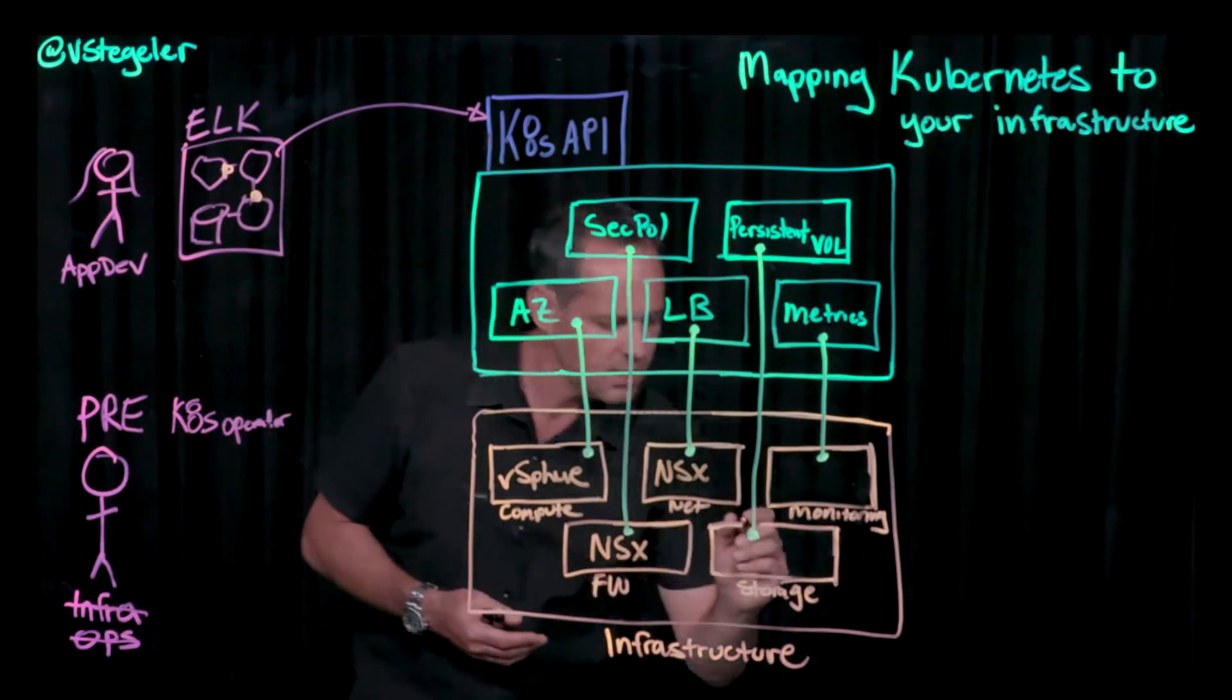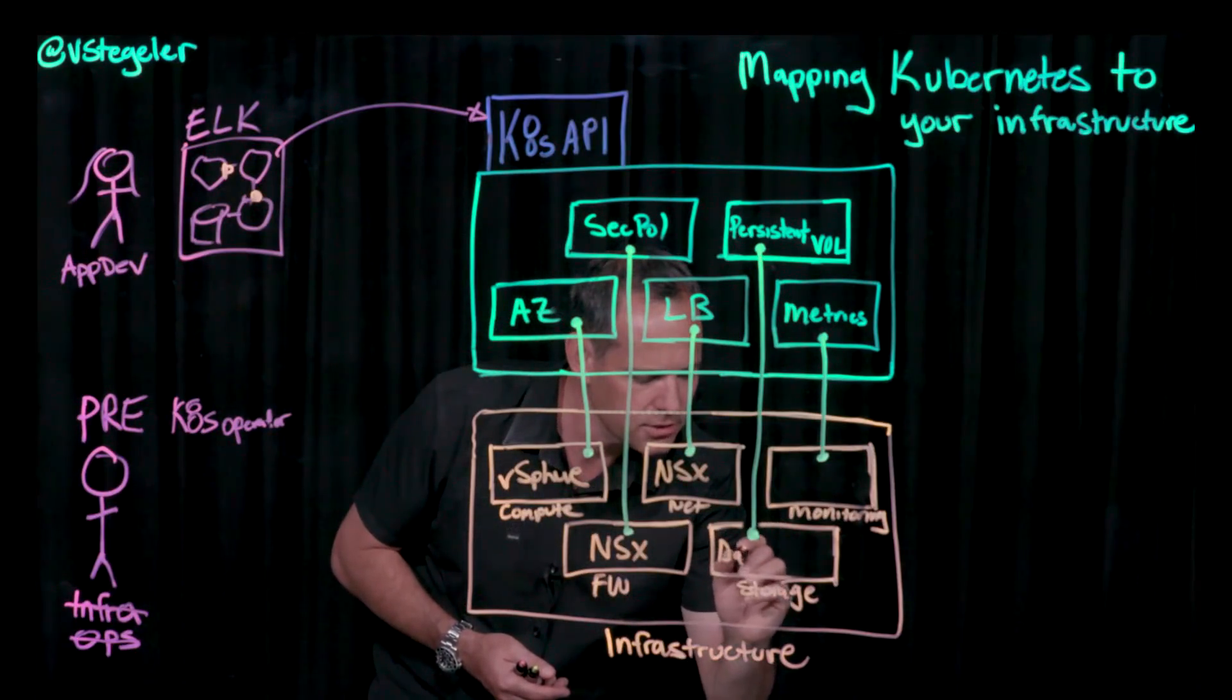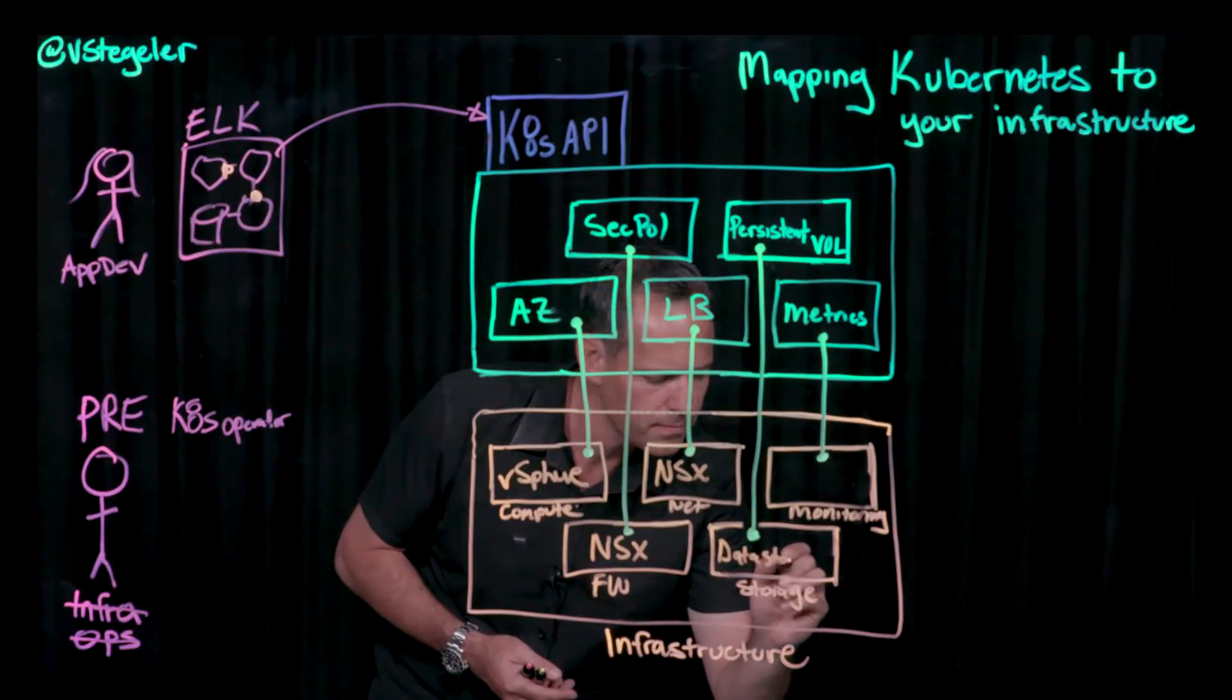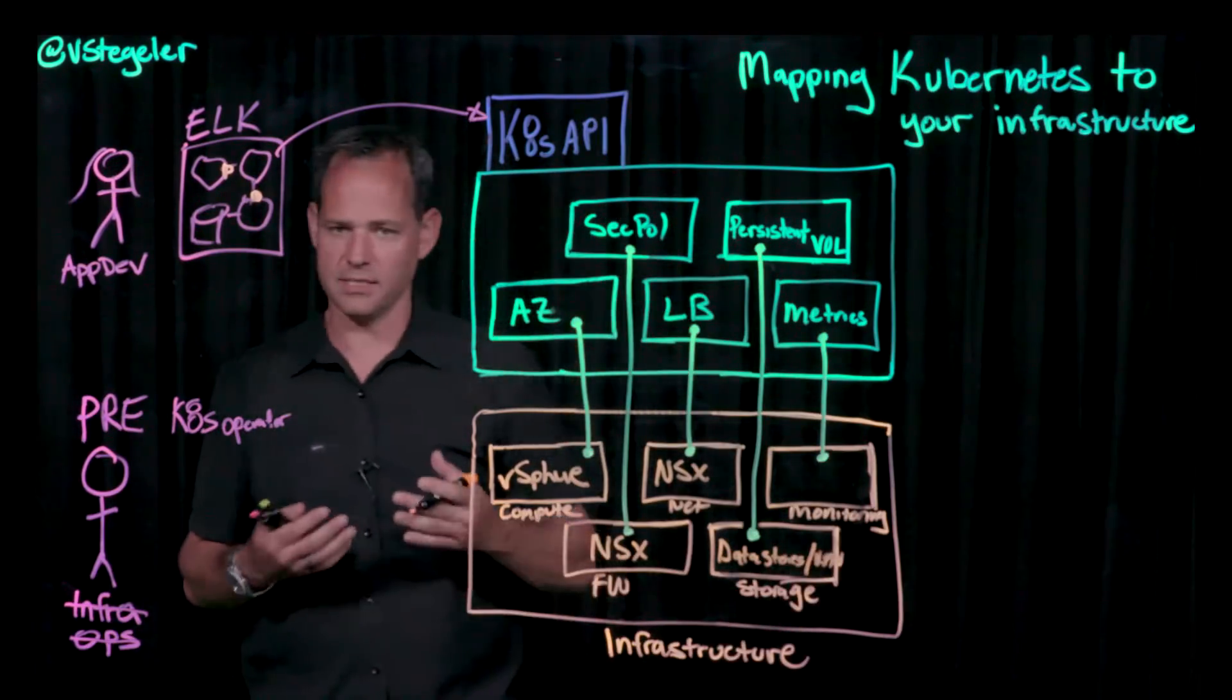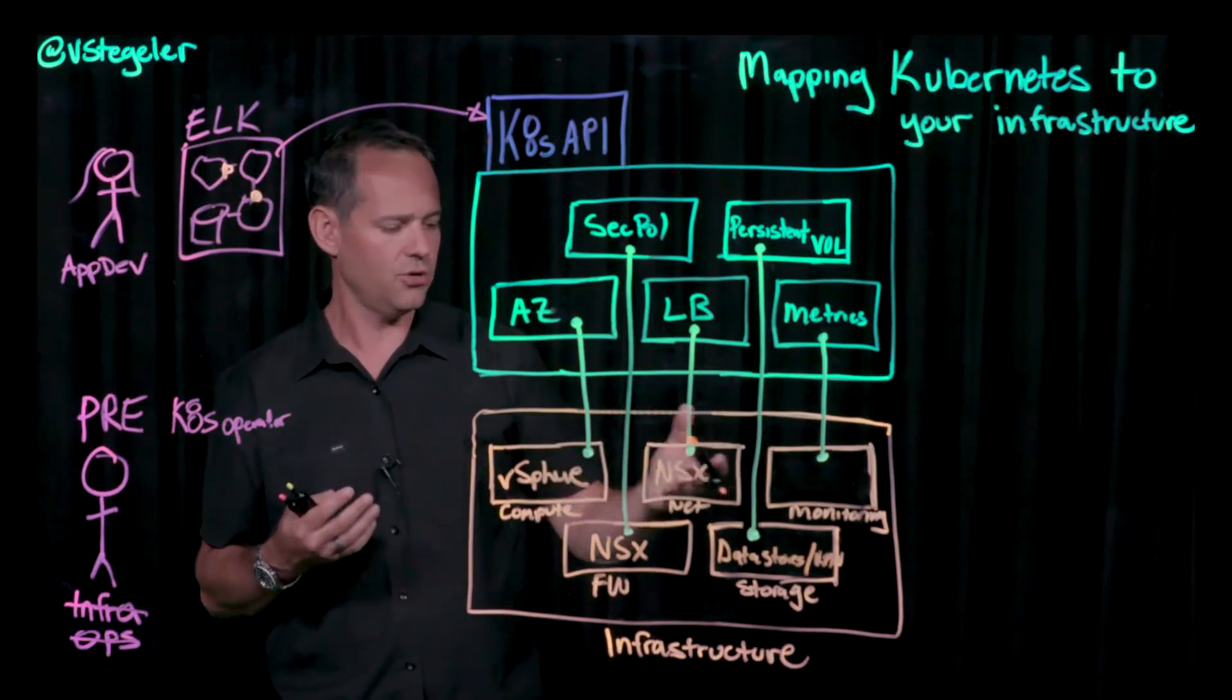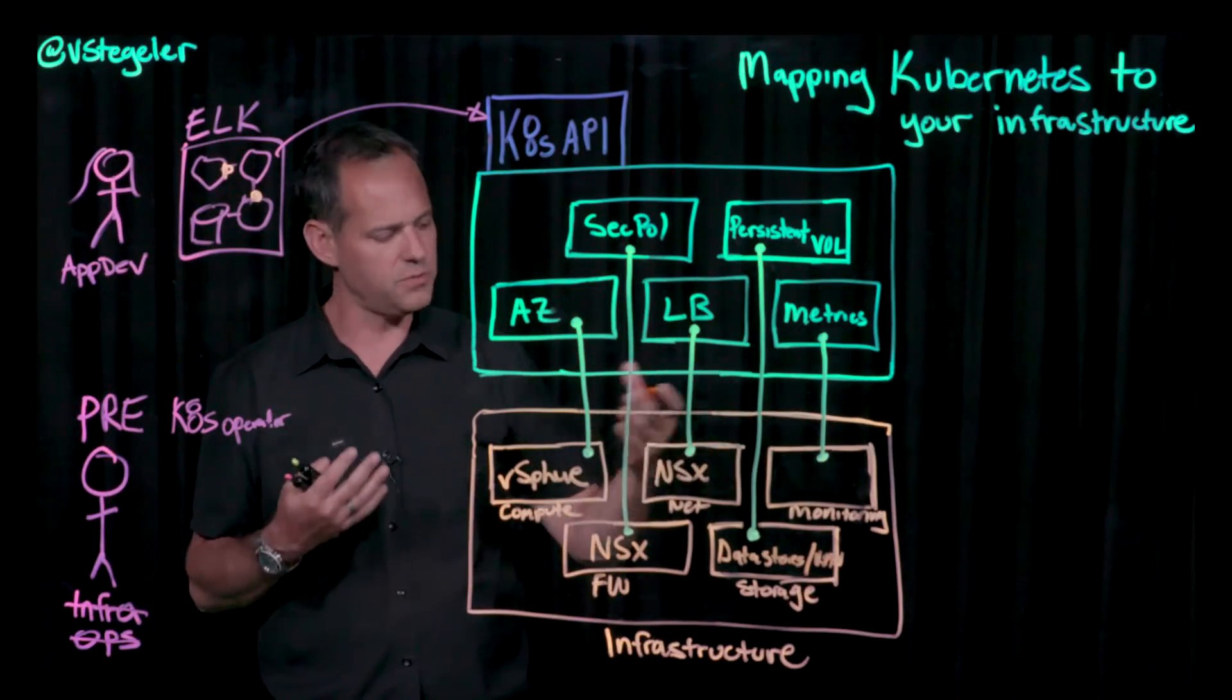Persistent volumes. Here we can leverage traditional data stores or we can leverage vSAN. We can get some advanced functionality like dedupe capabilities and encryption and so forth.